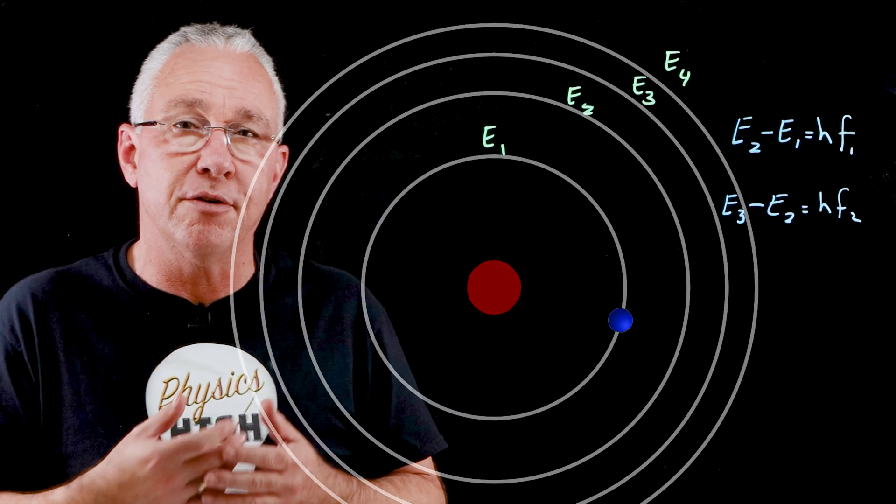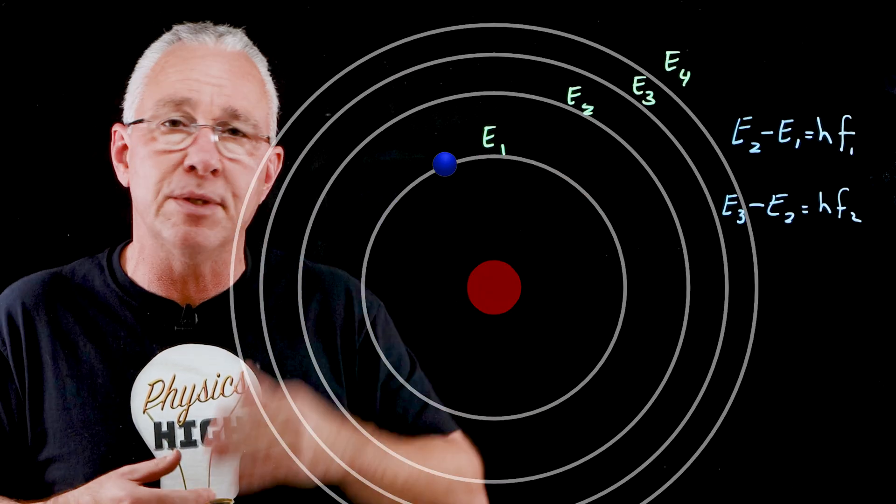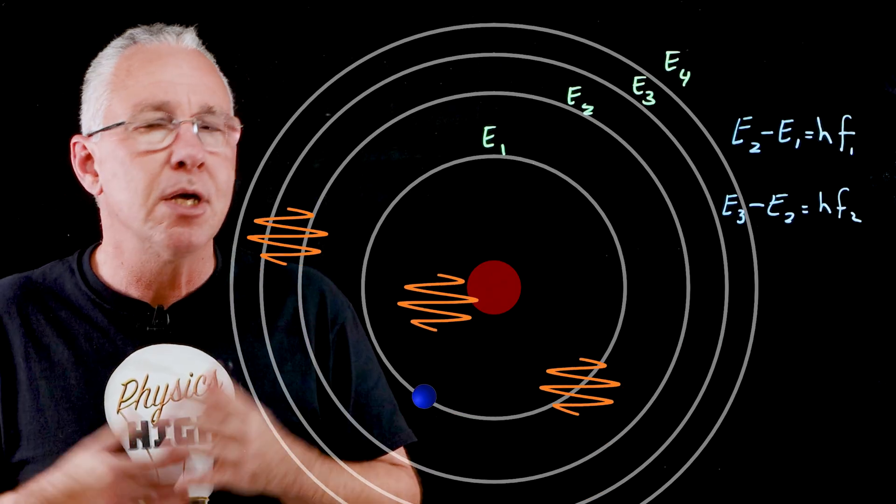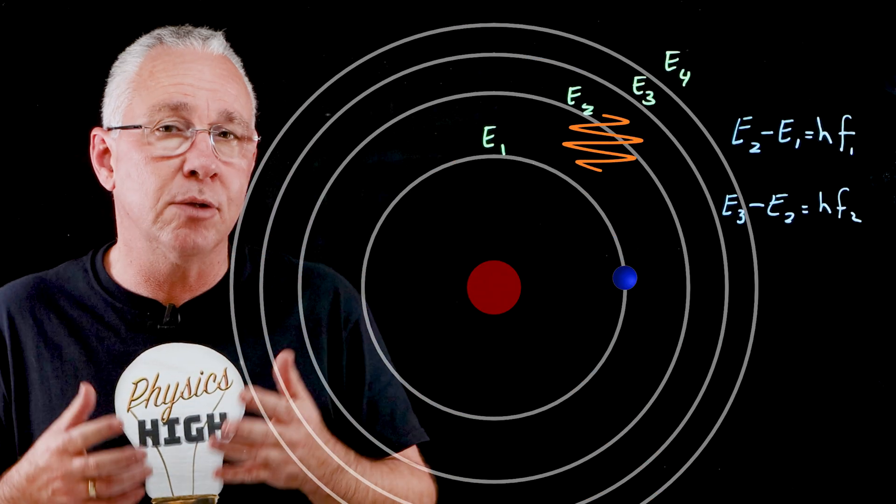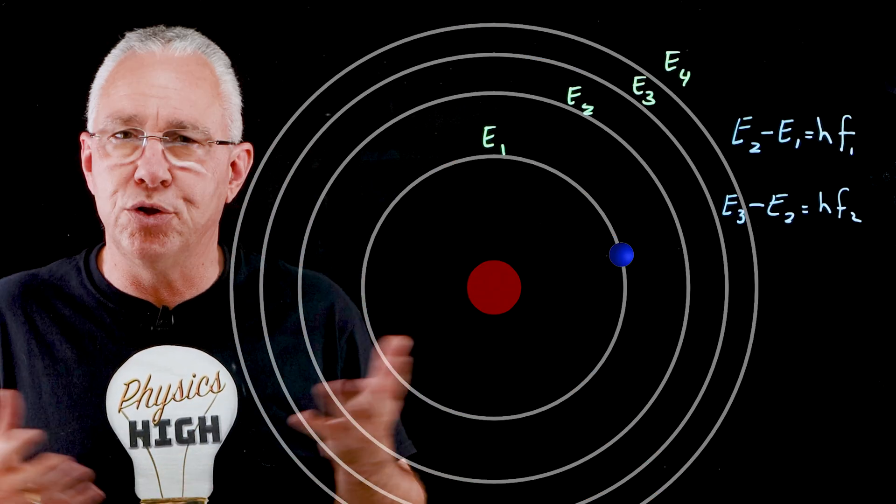What if the energy of the photon that arrives does not fit the frequency that we have listed here? Then nothing would happen. The electron would stay simply in the orbit. That photon would just pass by. With this idea, Niels Bohr was able to explain the emission and absorption spectra.